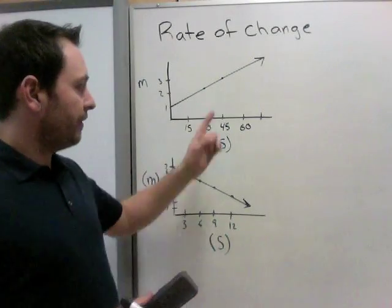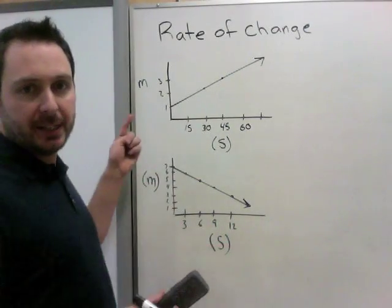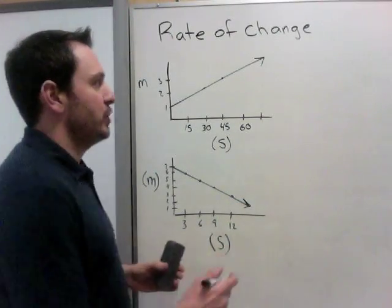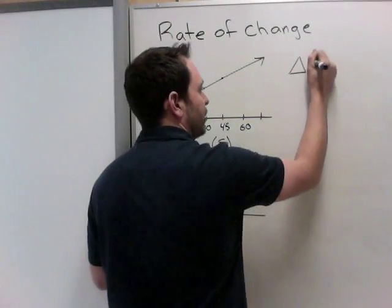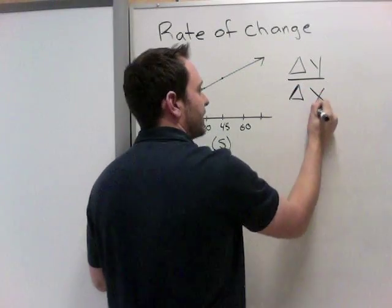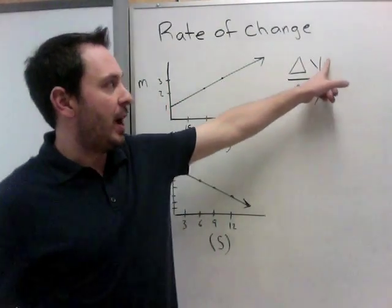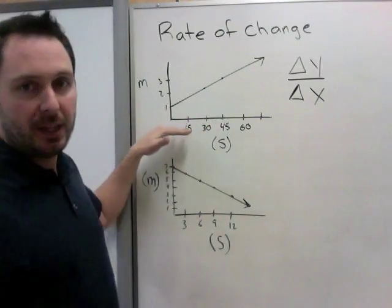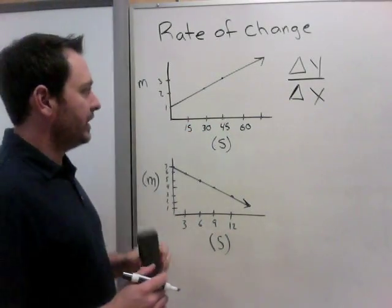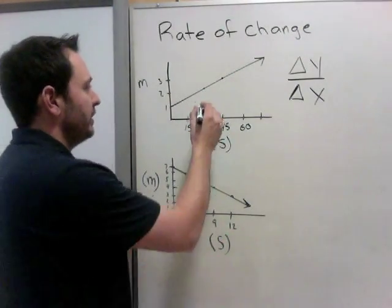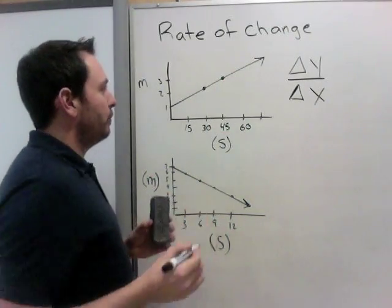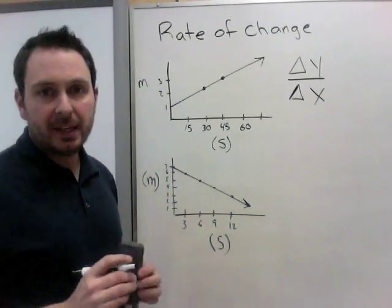First we're going to look at rate of change and what it means. So we have two different linear graphs here. Again, it's linear because it is a straight line. And rate of change was, from last lesson, the change in y divided by the change in x. So how much is your y, or your up and down changing, divided by how much is your left and right changing?